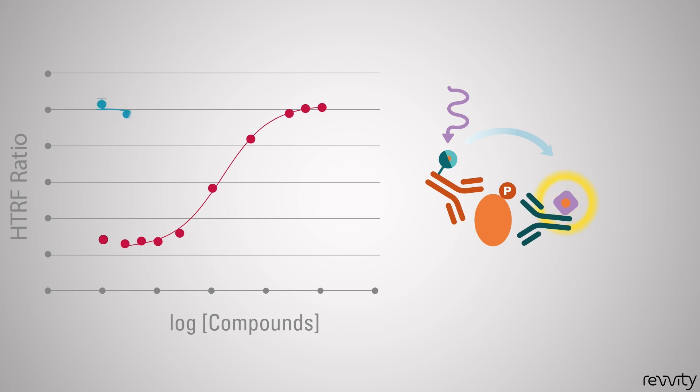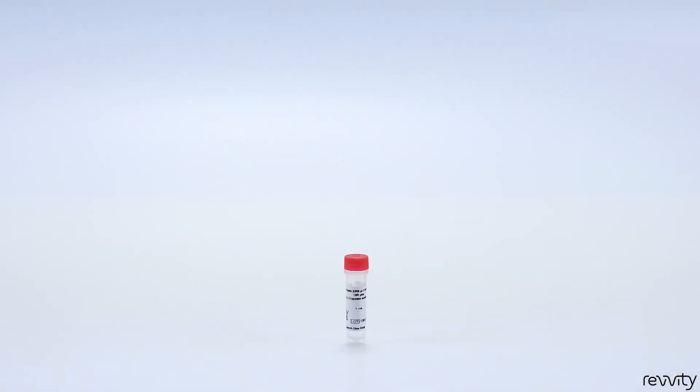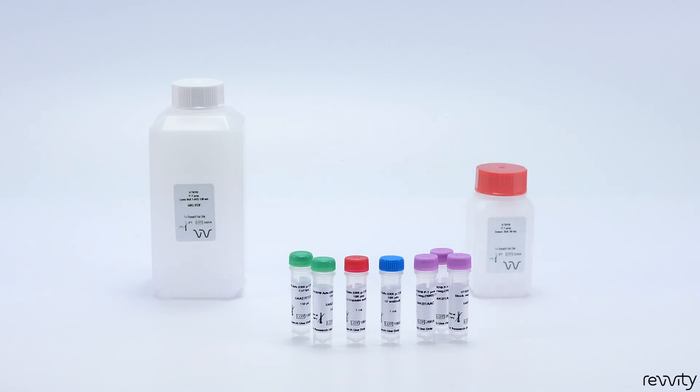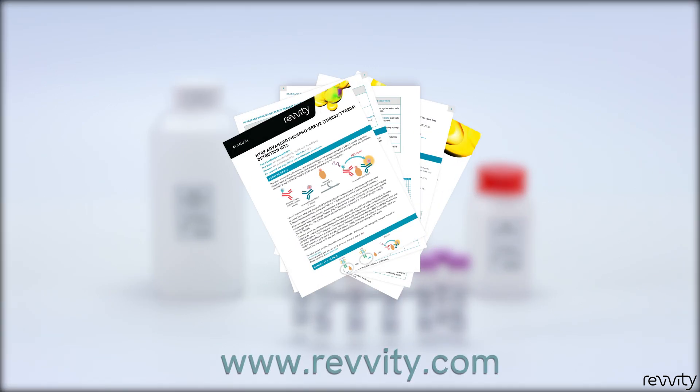Using this kit, you can measure either an increase or an inhibition of the phosphorylation. All components are included in the kit: Phospho-Protein donor antibody, Phospho-Protein acceptor antibody, ready-to-use control lysate, phosphatase inhibitor, lysis buffer, detection buffer, 96-low volume white plate in our 96-well kit size, and a protocol that you can also download on our website.